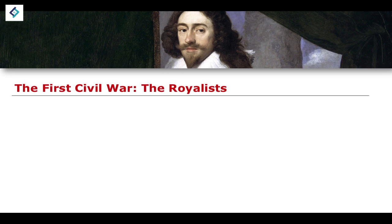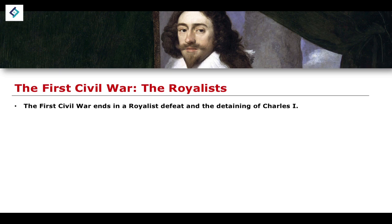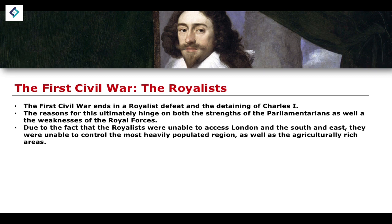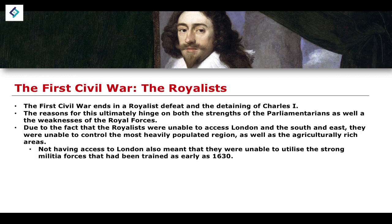Let's think about the Royalists in the First Civil War. The First Civil War ends with a Royalist defeat and the detaining of Charles I. The reasons for this hinge on the strengths of the Parliamentarians as well as the weaknesses of the Royalist forces. Due to the fact that the Royalists were unable to access London, as well as the south and east of England — where the most prominent riches and ripe agricultural areas lay — they were unable to control the most heavily and densely populated regions. Not having access to London meant they were unable to utilise the strong militia forces trained as early as the 1630s, which would ultimately side with the Parliamentarians.